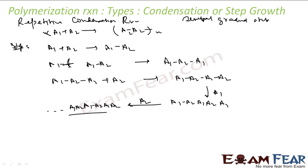The product of each step is a bifunctional species. Each step is unique. For example, in this case a1 plus a2 react to form a1-a2, here a1 reacted with a1-a2 we formed this, in this step a1-a2-a1 reacted with a2, so every reaction is a unique reaction.